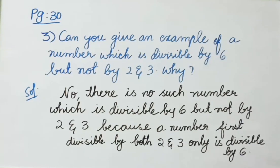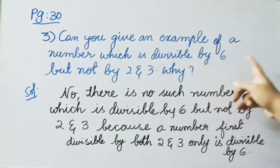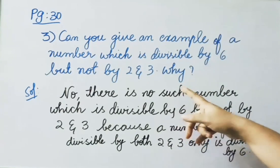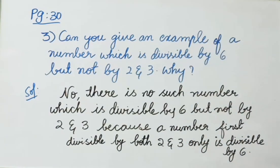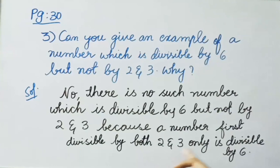Third question: Can we give an example of a number which is divisible by 6 but not by 2 and 3? No, there is no such number. Because according to the divisibility rule by 6, a number must first be divisible by both 2 and 3, and then only it is divisible by 6.